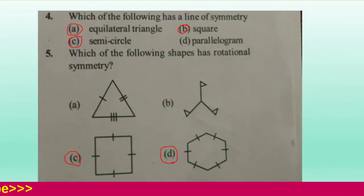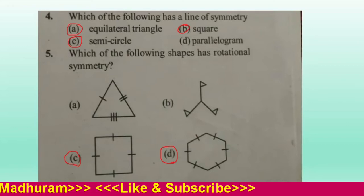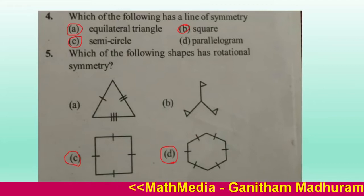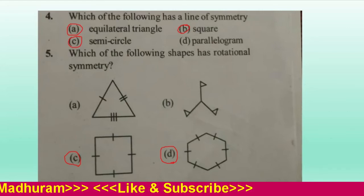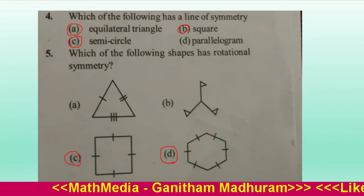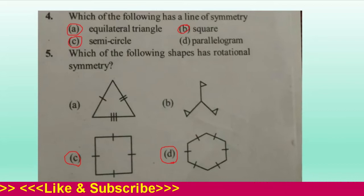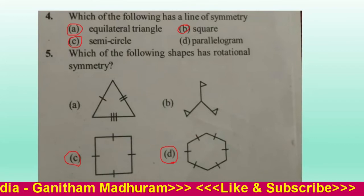Next question: Which of the following has a line of symmetry? An equilateral triangle — yes, it has a line of symmetry. A square — it also has a line of symmetry. A semicircle — it also has a line of symmetry. A parallelogram — no, it does not have a line of symmetry. So the correct options are A, B, and C.